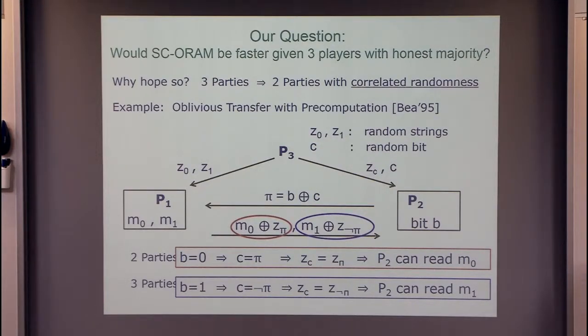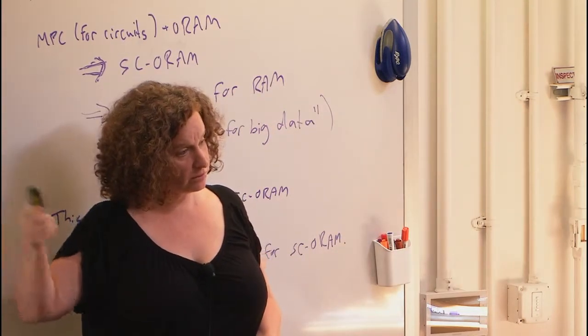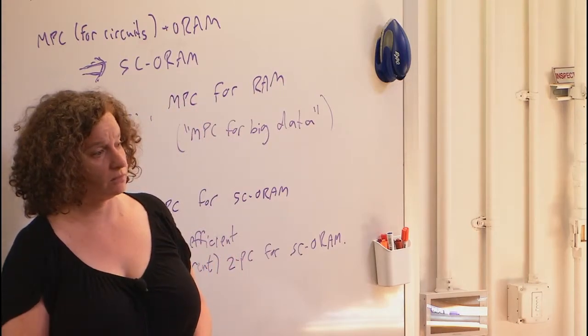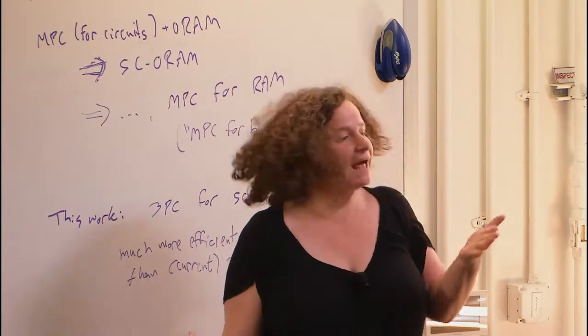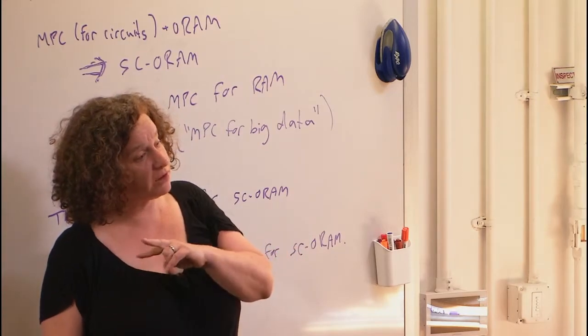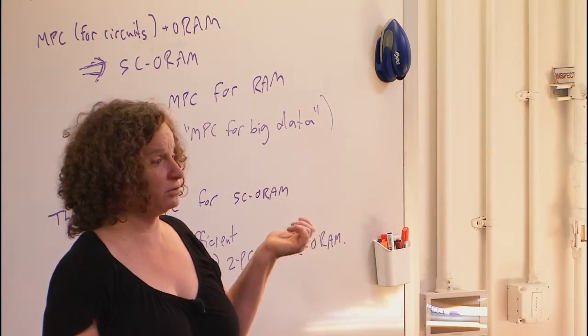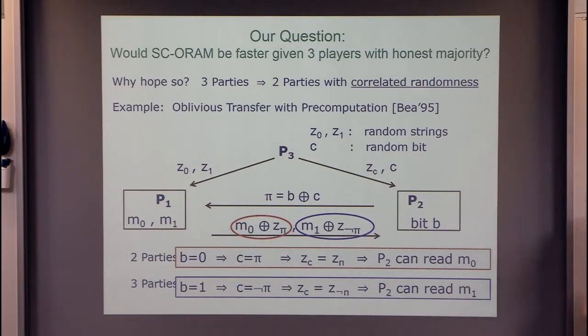The idea to improve that is maybe instead of having two parties, we'll have three parties. The generic part is obvious, you can do as many parties as you want. But maybe moving from two-party to three-party can make our efficiency much better. Why would we believe that? First of all, we know that if you have honest majority, we'll assume these three parties, at most one is corrupted. Things become much easier. One example is if you have three parties, you can simulate any protocol for two parties with correlated randomness, because the third party could give them the correlated randomness.